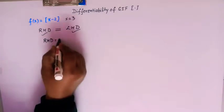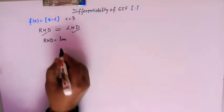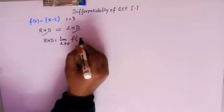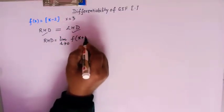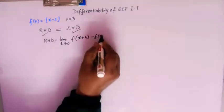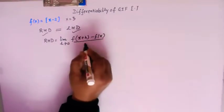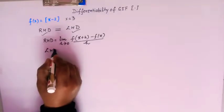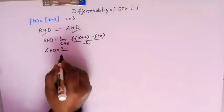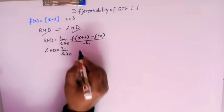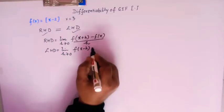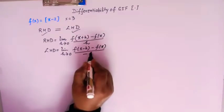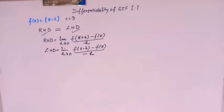The right hand derivative is given by the limit: limit h tends to 0 of [f(x+h) - f(x)] / h. And the left hand derivative is given by the limit: limit h tends to 0 of [f(x-h) - f(x)] / (-h).